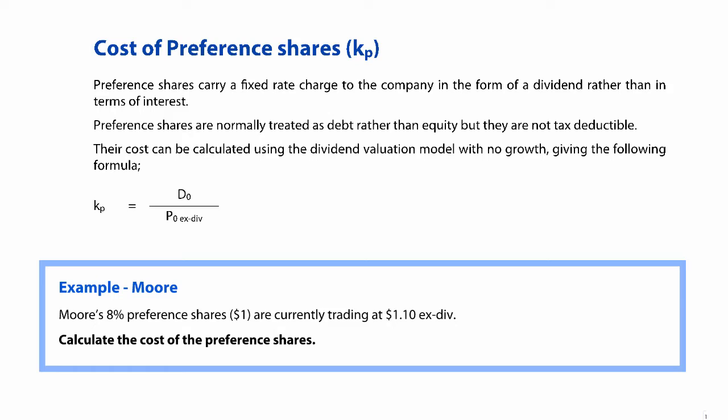The cost of preference shares is a very simple calculation to go through and calculate within any exam question. To be able to work out where the formula comes from, we need to use the dividend valuation model. So we assume that we have a dividend that goes from today into infinity, like we had previously with our cost of equity.